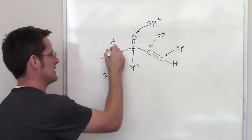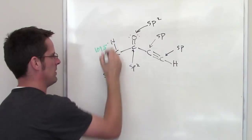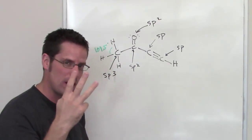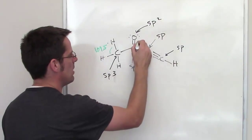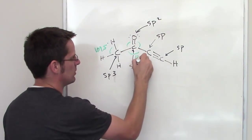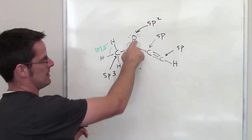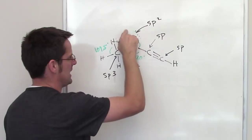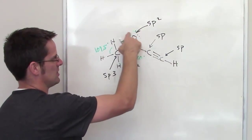Around an sp2 hybridized center - a center that has three things around it - it's going to be about 120 degrees. And then same thing is going to be up here: 120 degree bond angles between each of the things, each of these sets of lone pairs around that oxygen.